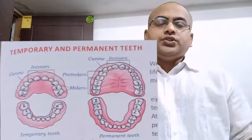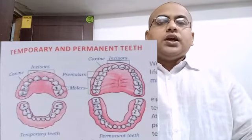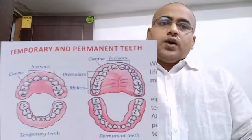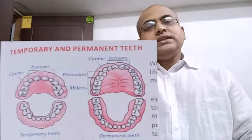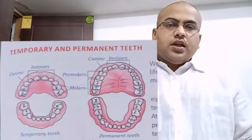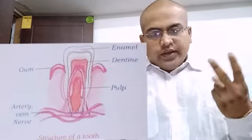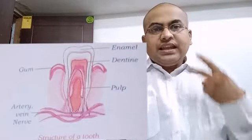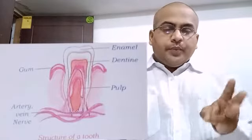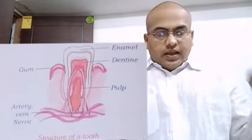Question number one: How are teeth important to us? Teeth are important to us because, number one, they help us to bite and chew the food. Number two, they help us in talking or speaking clearly. And number three, they also give shape to our face.